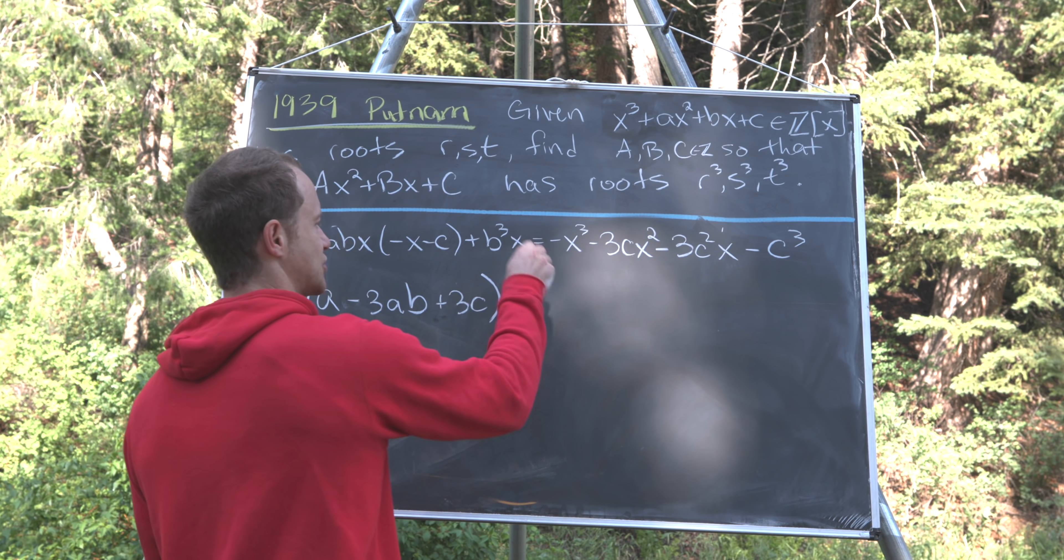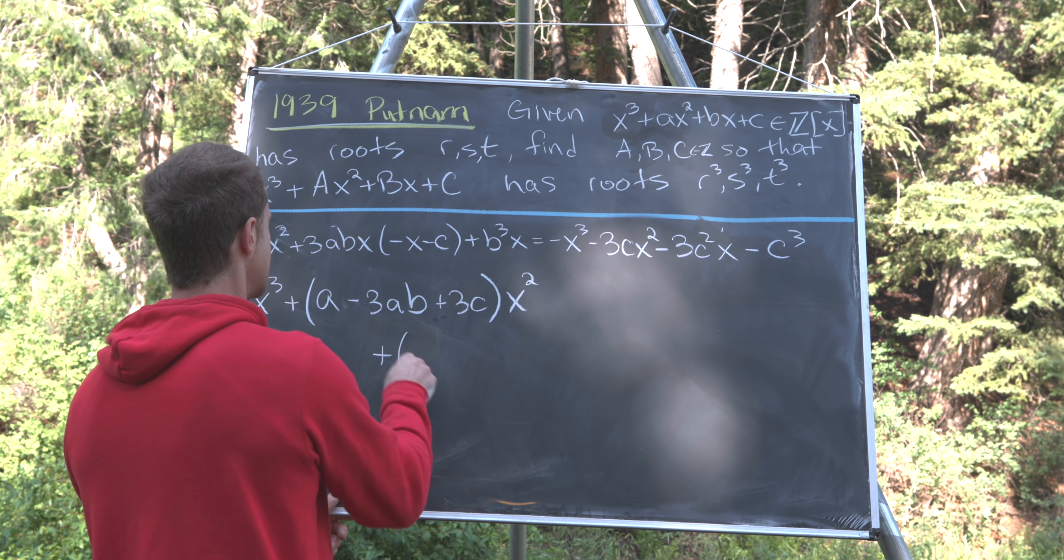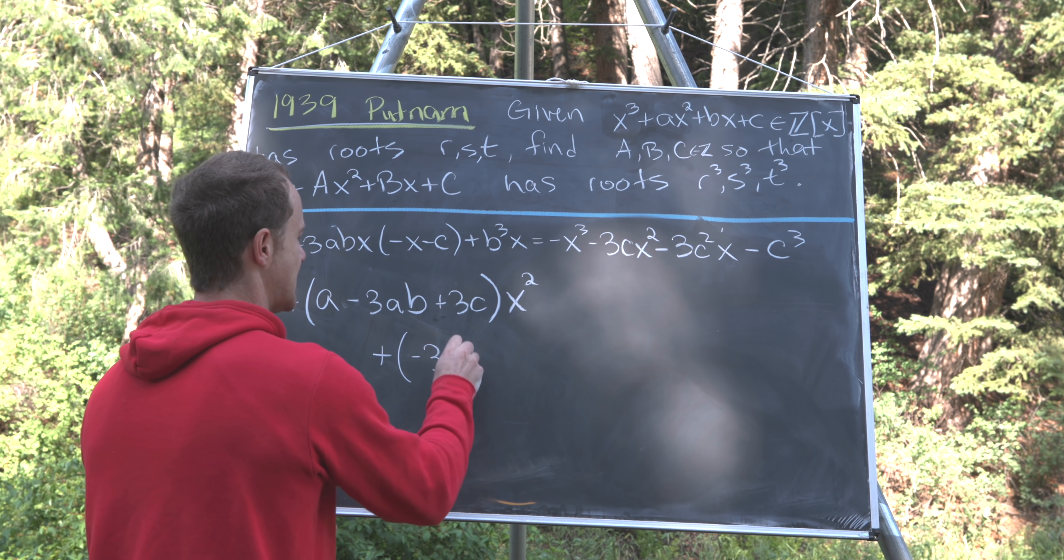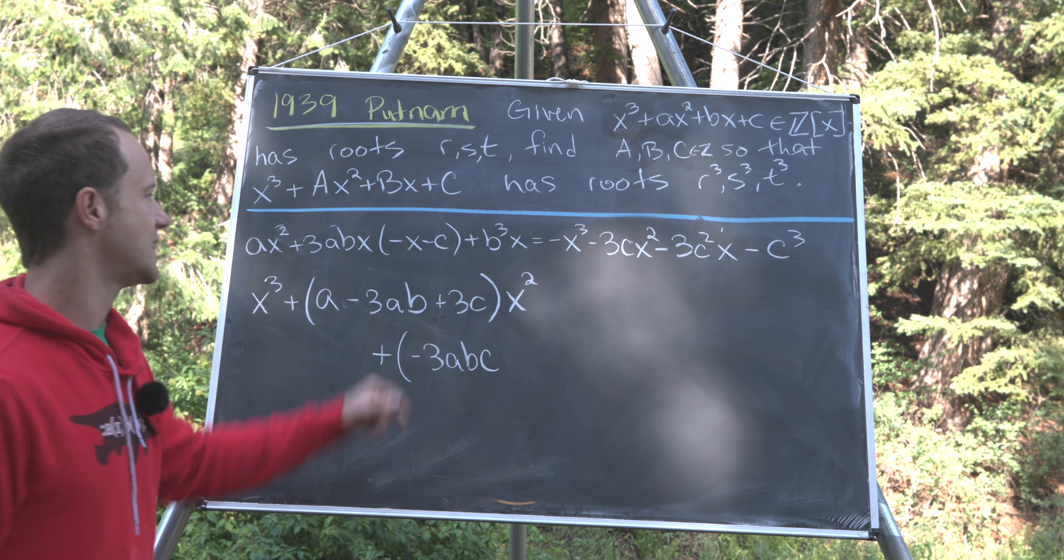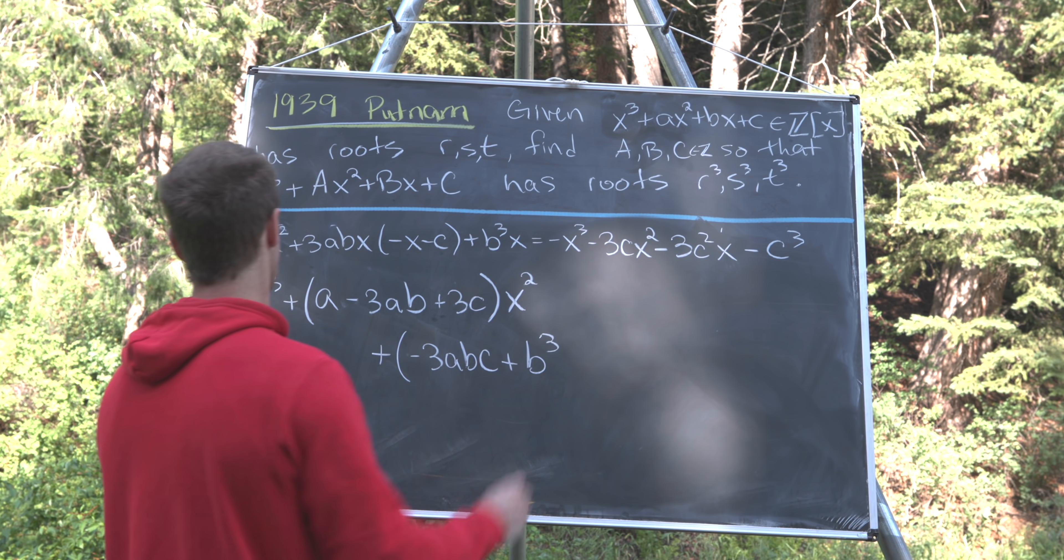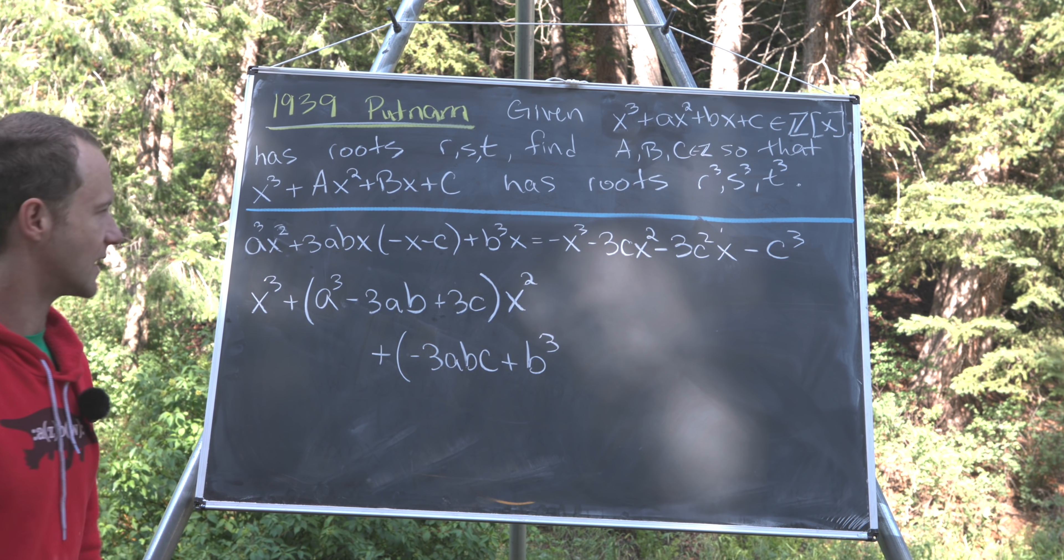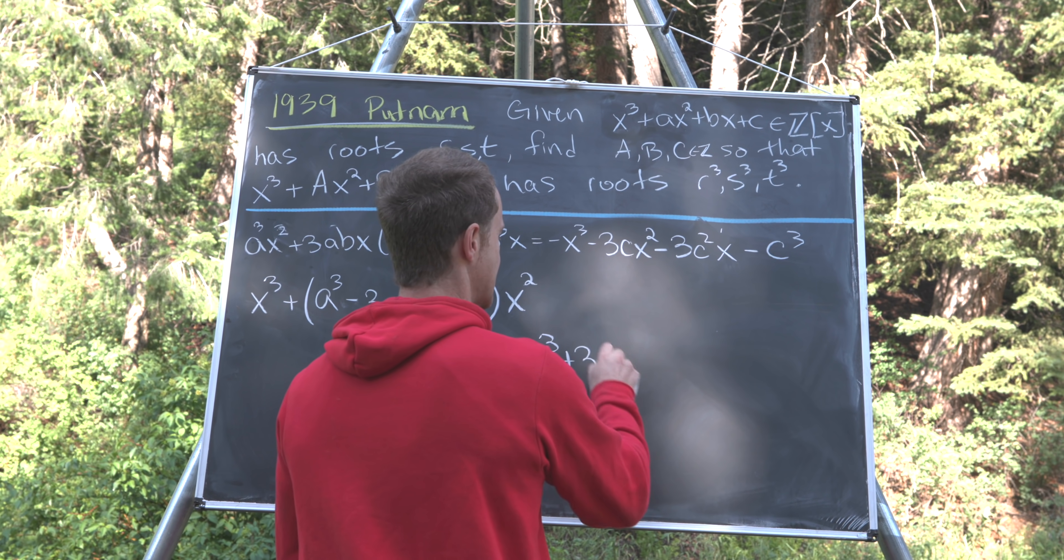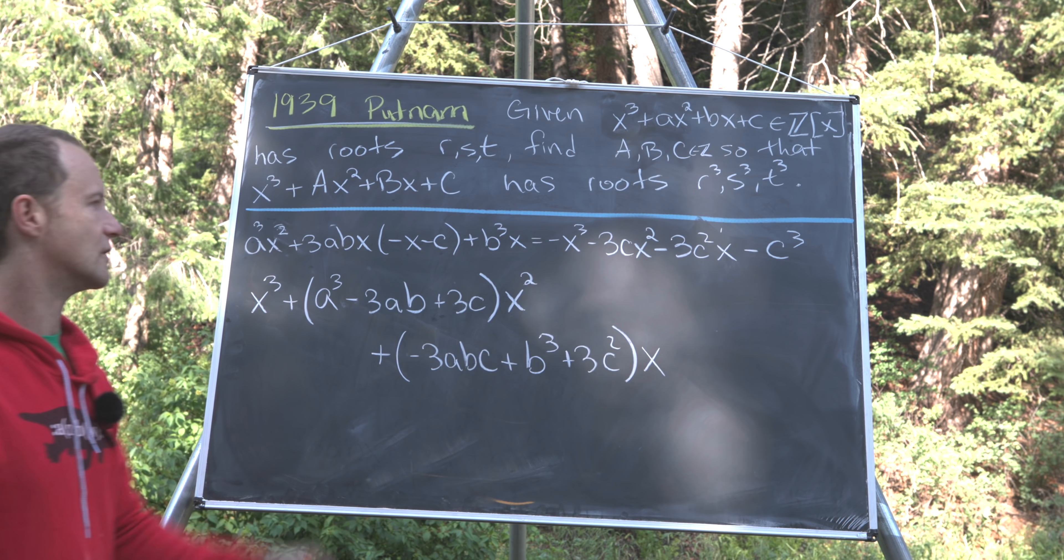So now let's see what our coefficient of x is. We'll play the same kind of game. We'll have a minus 3abc from this multiplying through here. We'll have a plus b³. Oh, and I just realized this should have been a³. So let's add that in there. And then we'll have a plus 3c². So that's our coefficient of x. We get that last term from moving this over.